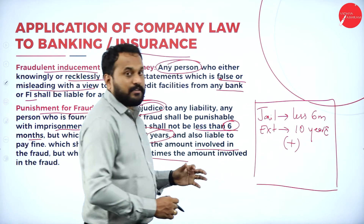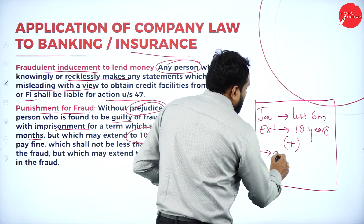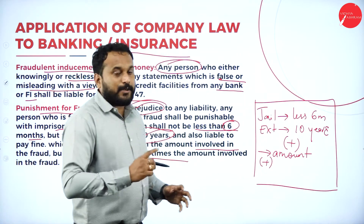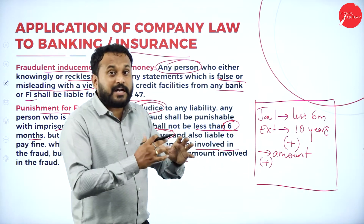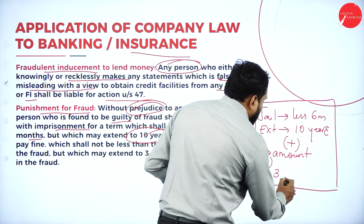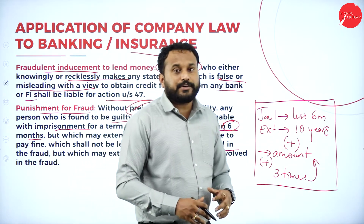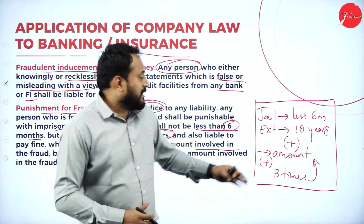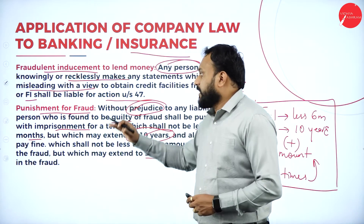Regarding the fine, the fraudster must repay whatever amount was involved in the fraud. The fine shall not be less than the amount involved in the fraud but may extend to 3 times the amount involved. The court decides within this range — they cannot impose more than 3 times nor less than the actual fraud amount. These are the two criteria for punishment for fraud.